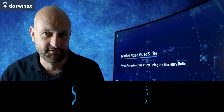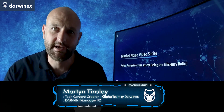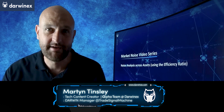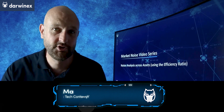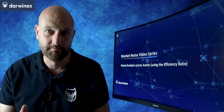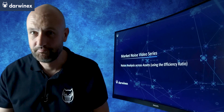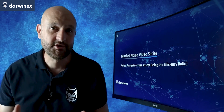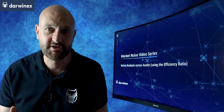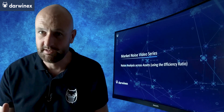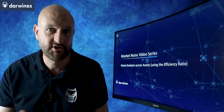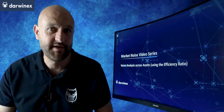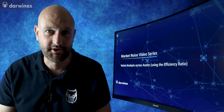For all aspects of trading, there are multiple ways of achieving an outcome. That's what makes it so interesting as you endeavour to identify the processes, rules, and tools that will work best for you. And measuring noise is no exception. So following our use of price density last time, I now turn my attention to the efficiency ratio. I'll be performing the same analysis as last time across the same range of assets and classes, and then comparing the outcome with that of using price density. Let's make a start.